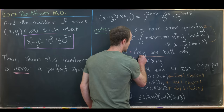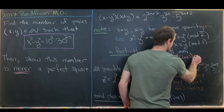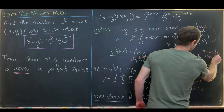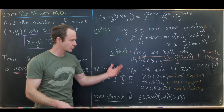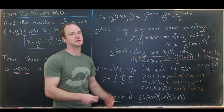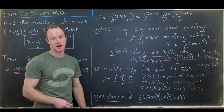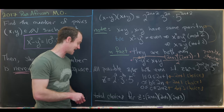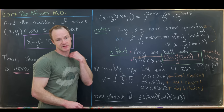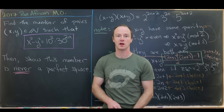Putting it all together, there are [(2n+1)² × (2n+3) − 1] / 2 possible choices for x minus y. After choosing x minus y, x plus y is determined, and so x and y are determined. This expression is the answer to the first part of the question.